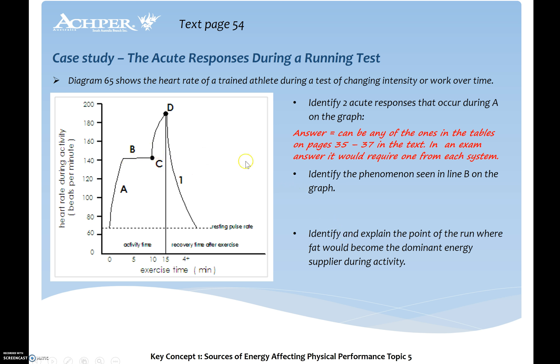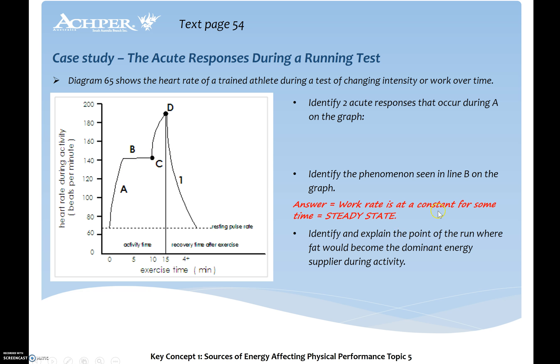For question two, identify the phenomenon seen at line B. Oxygen needs are meeting oxygen demands, there's no spike in heart rate, and it remains constant for some time — so it's a steady state.